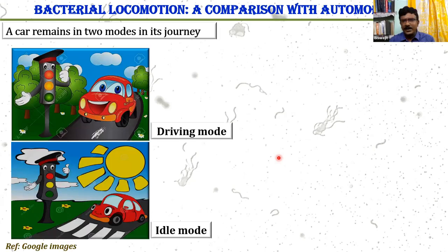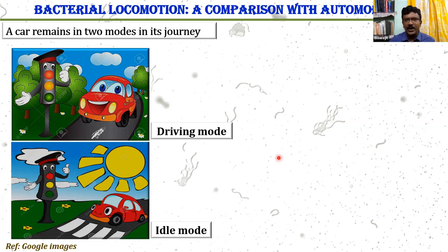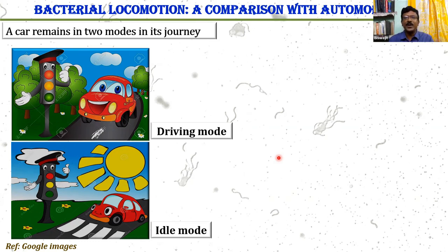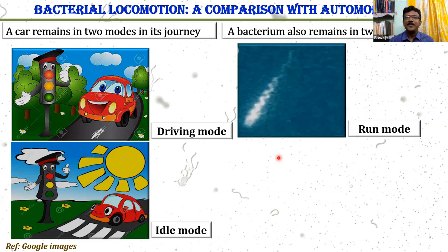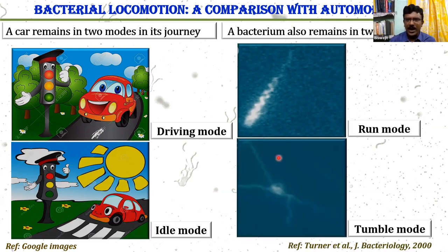Suppose a car during its journey remains in driving mode or in an idle mode. If there is no obstacle in the road, the car remains in driving mode. But when some obstacle is there, or there is a red light at the traffic signal, the car goes to an idle state. Similarly, a bacteria also remains in two modes: one is run mode, and the other is tumble mode.